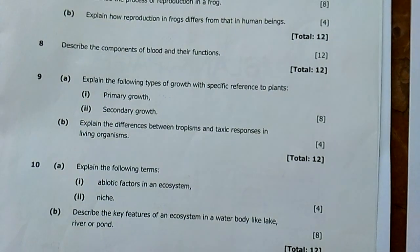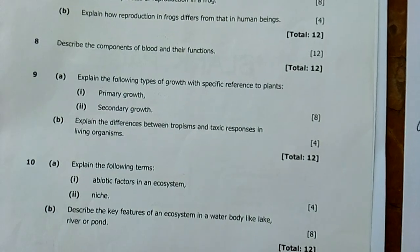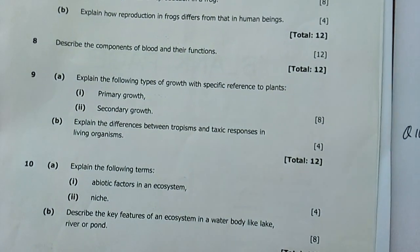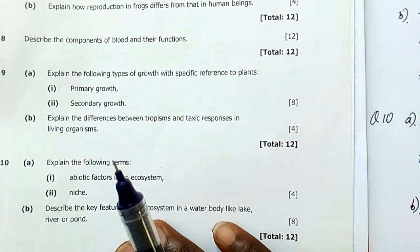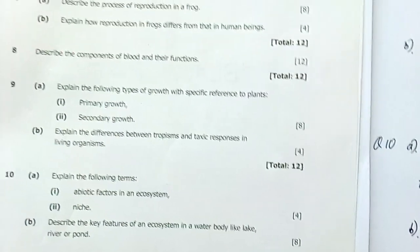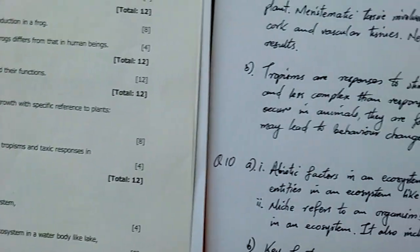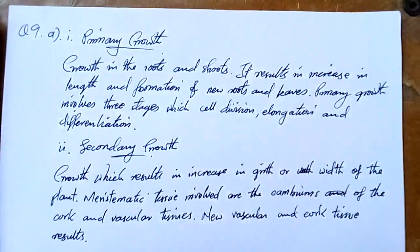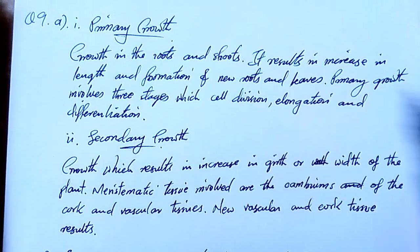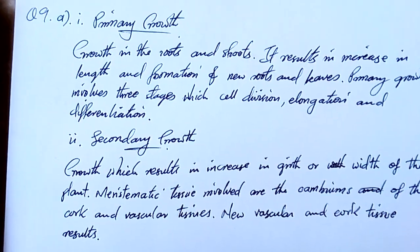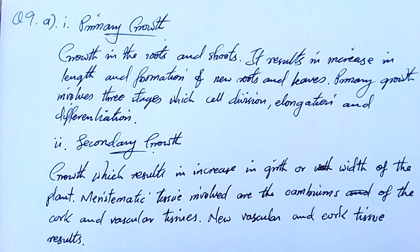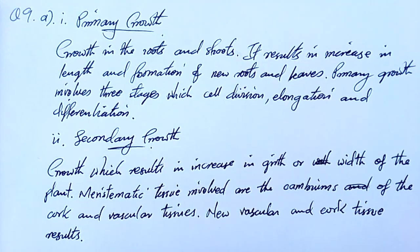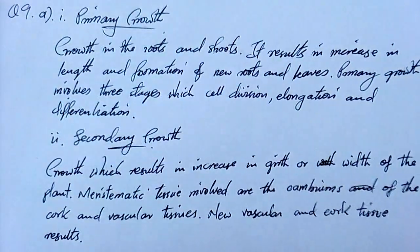Question 9: explain the following types of growth with specific references in plants — primary growth and secondary growth. Primary growth is growth in the roots and shoots of a plant, resulting in increase in length and formation of new roots and leaves. Primary growth involves three stages: cell division, elongation, and differentiation.